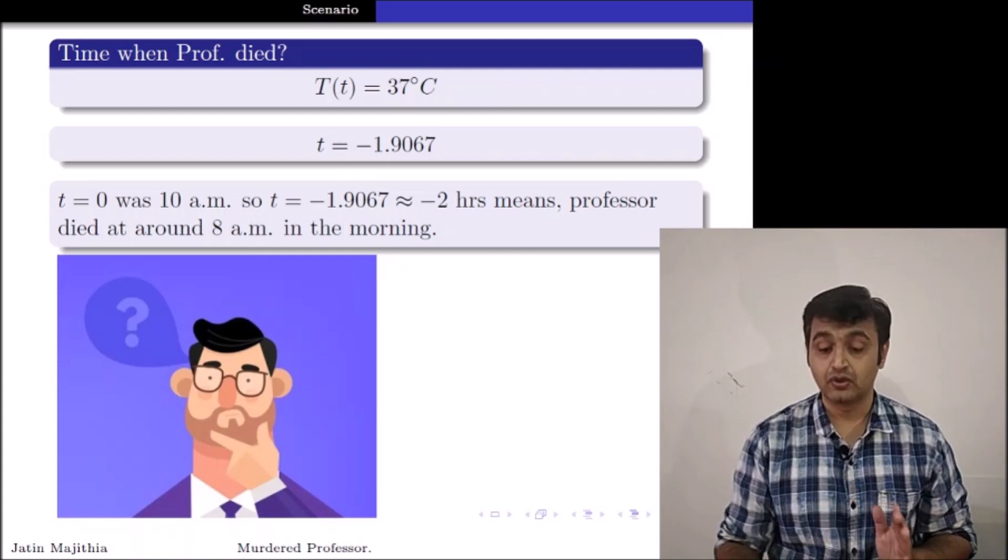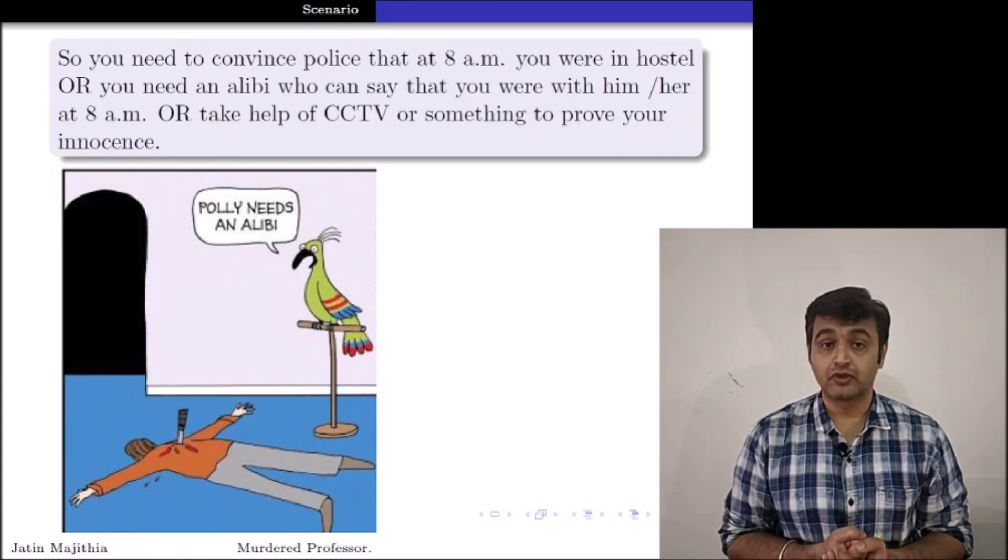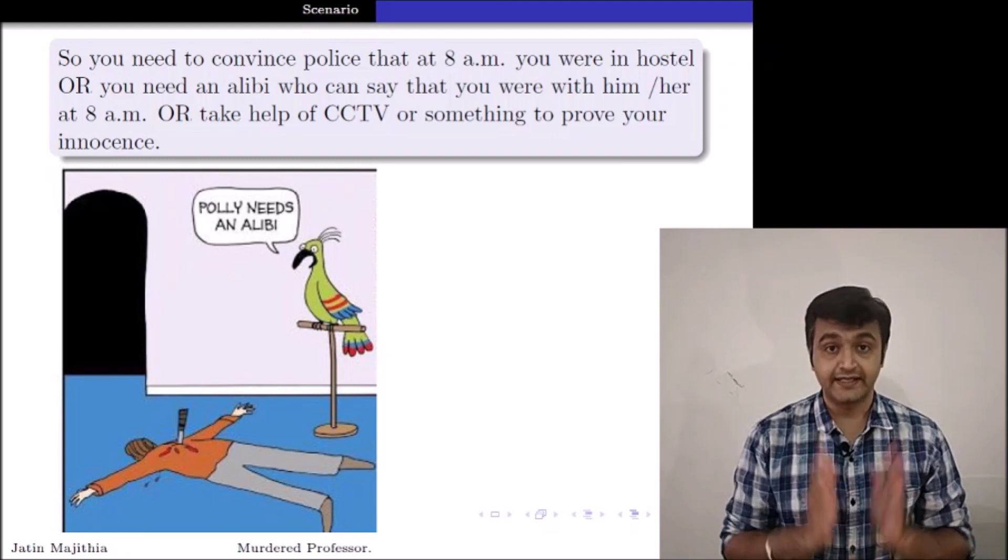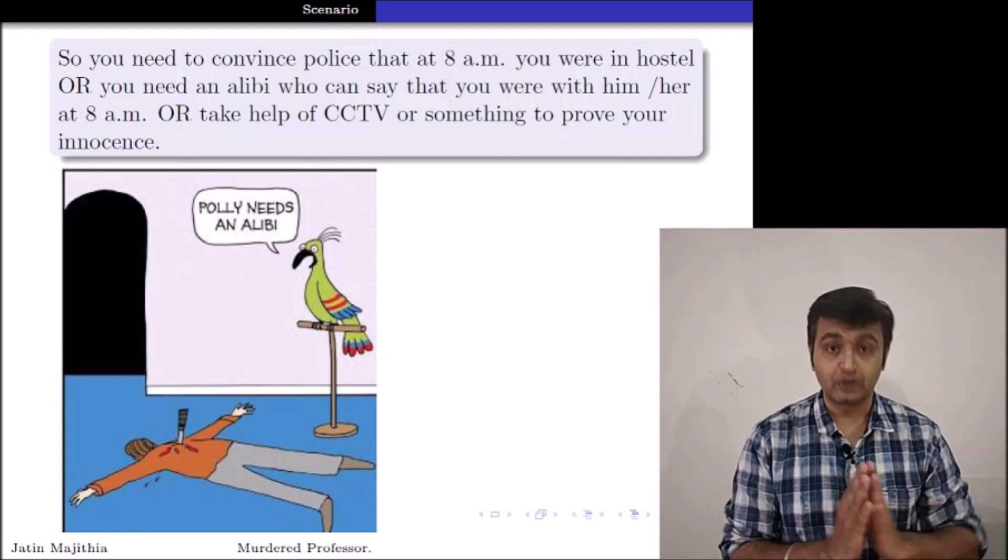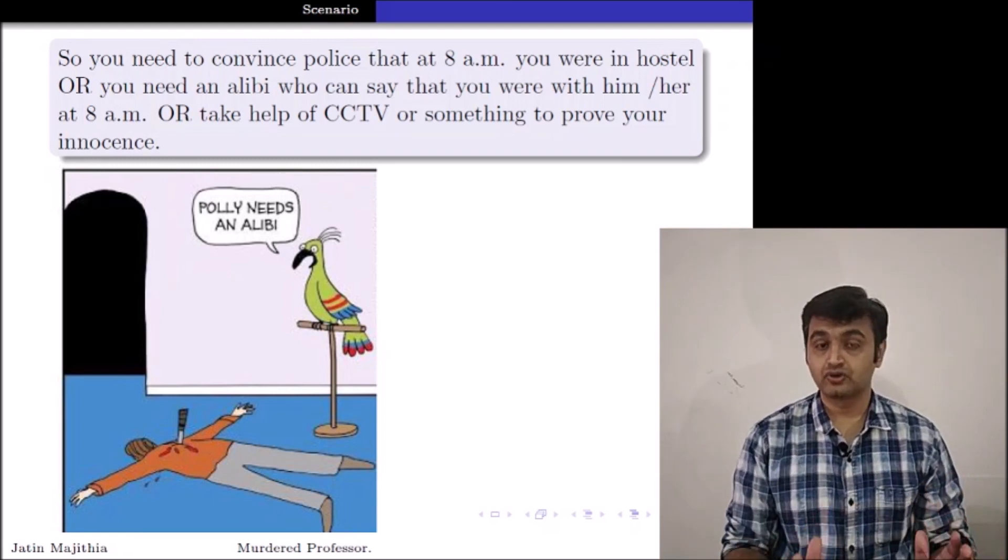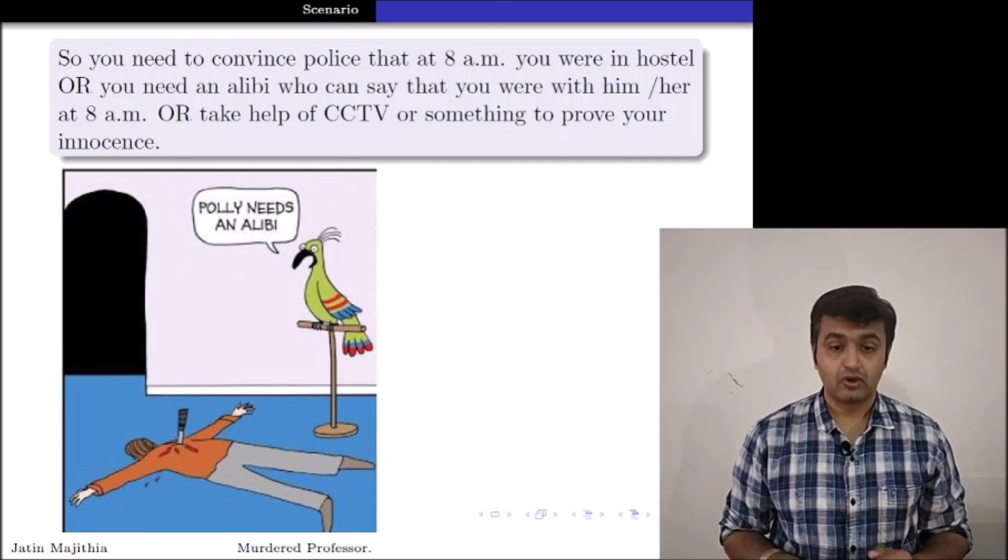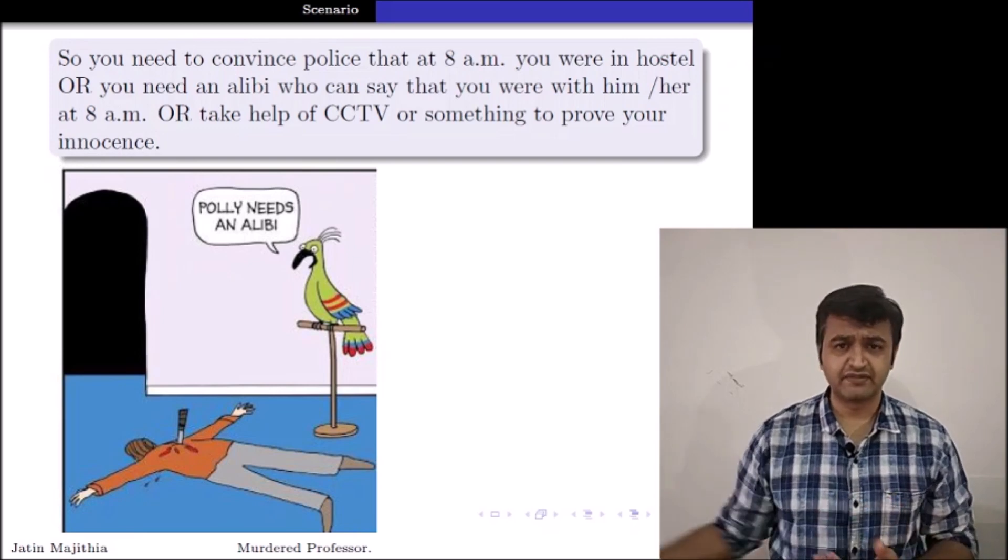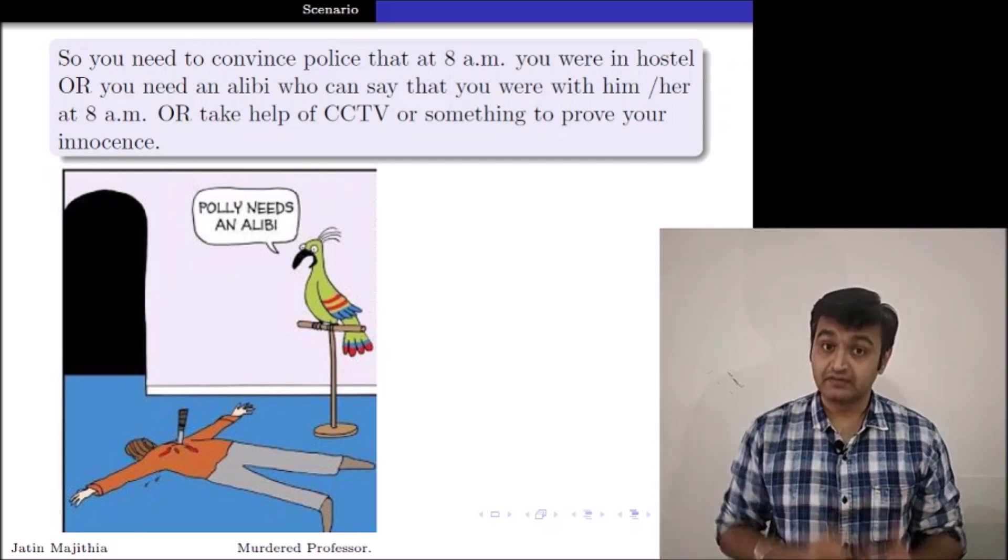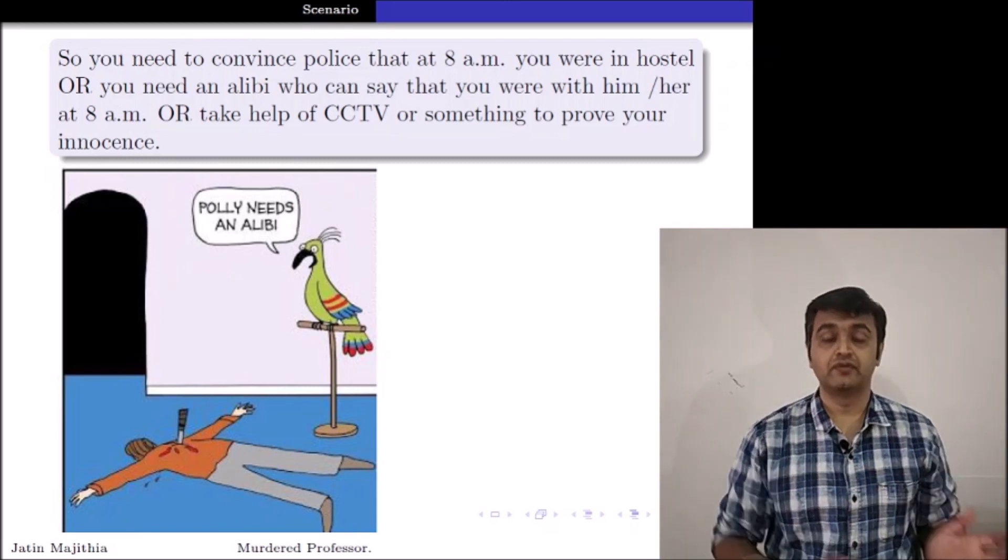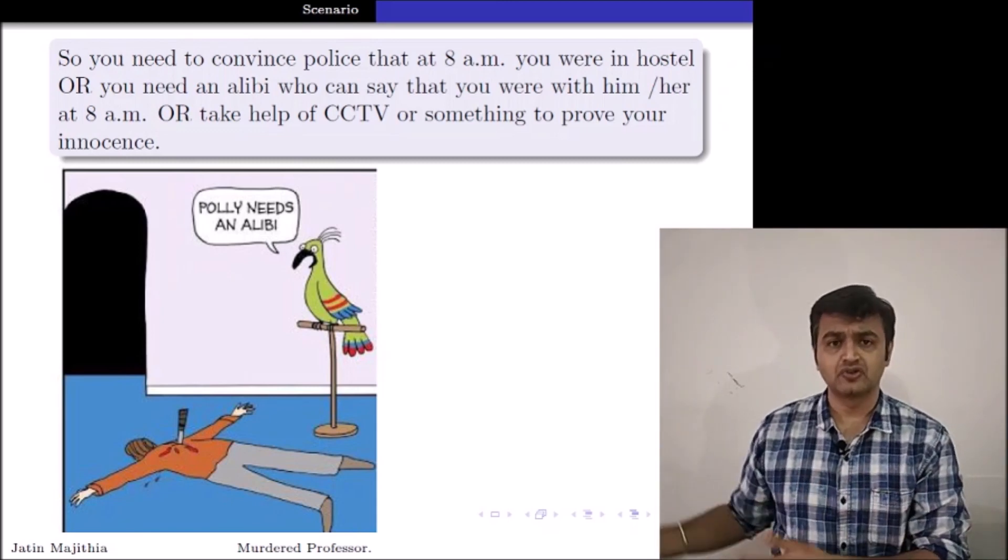You have enough information now. So now what you want to do? Your job is you should convince police that at 8 AM you were not in the college. Or you should get an alibi who can say this person was with me at around 8 AM. Or you should show them some CCTV footage or something so that it will convince police that at 8 AM you were not in the college. You were either in your hostel or at the house or on the way.